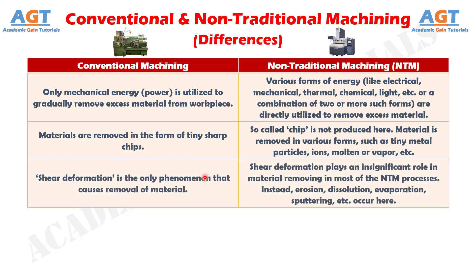Difference No. 3: Shear deformation is the only phenomenon that causes removal of material in conventional machining, whereas shear deformation plays an insignificant role in material removal in most of the non-traditional machining processes. Instead, erosion, dissolution, evaporation, sputtering, etc. occur here.